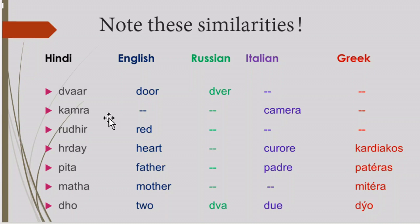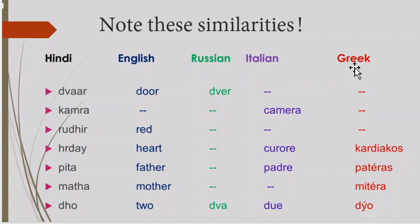See how these words are similar in these apparently very different languages. Hindi and related languages are spoken in northern parts of India. English had its origin far away in England, and Russian is again far away from English and from Hindi. Italian is near the Mediterranean Sea, and Greek is also in the Mediterranean region. How come there are such similarities between words in different languages? That is why it looks like not only English and Hindi, but Russian, Italian, Greek and Hindi all seem to be cousins.